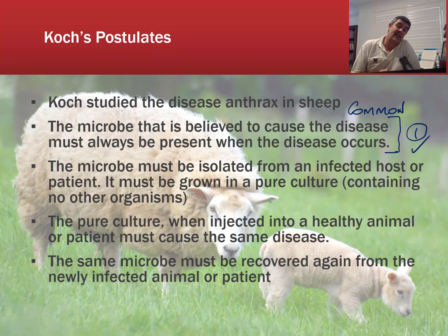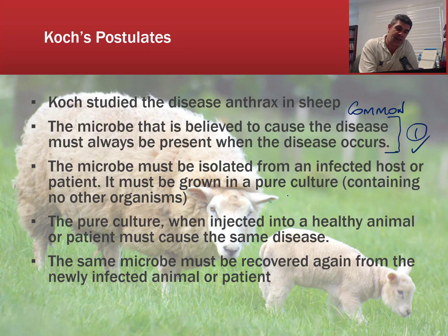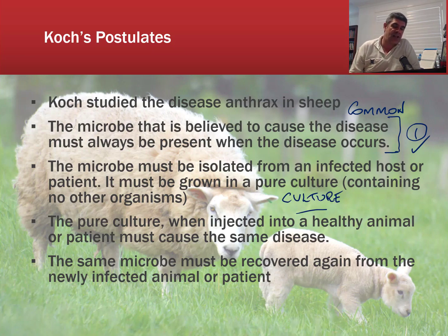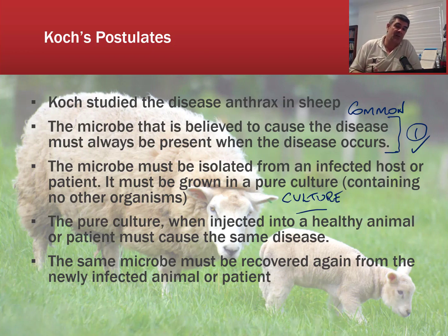The second step is to isolate the microbe from an infected host and grow it in a pure culture — that's the second C: 'culture.' We don't want to simply inject blood from an infected individual, because blood may contain other things we're unaware of. So we remove any other microbes or substances, focus on the specific microbe we're interested in, and grow it up in a pure culture.